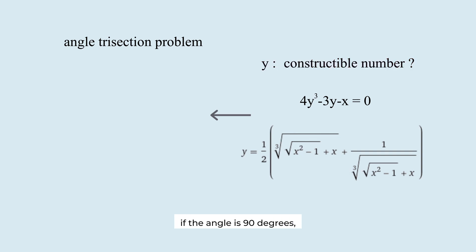For example, if the angle is 90 degrees, then x is 0. And y becomes this particular value. Since this consists of rational numbers and square roots, trisection for this angle is possible.